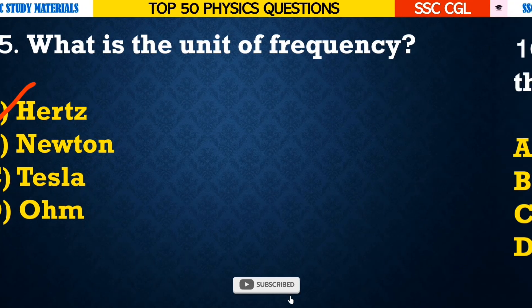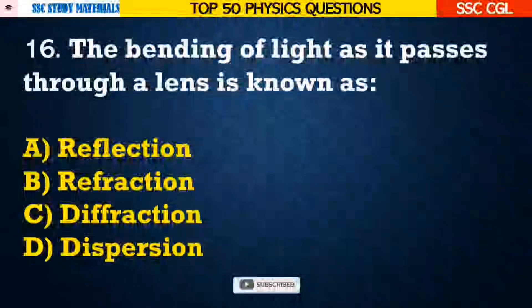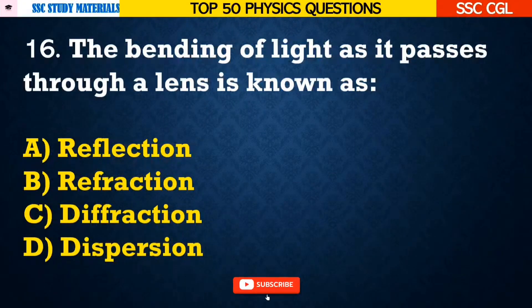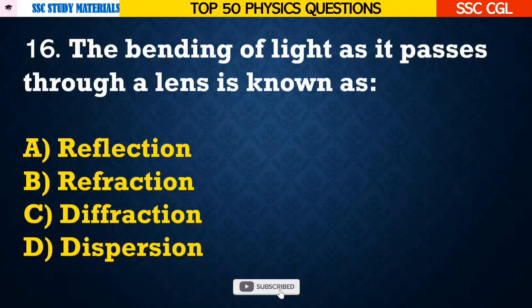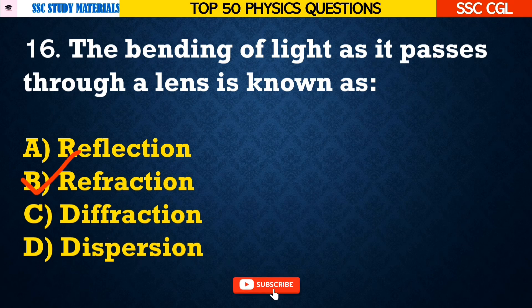Question number 16: The bending of light as it passes through a lens is known as — Answer B. It is known as refraction.